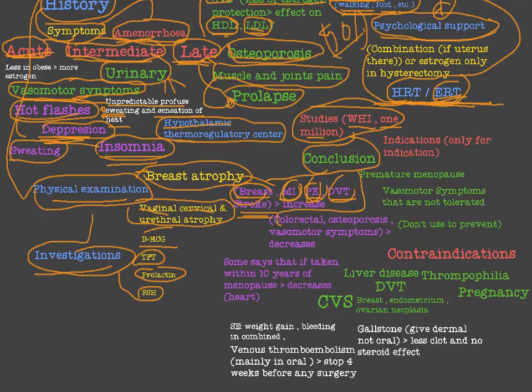On the other hand, the studies also concluded that HRT decreases the risk of colorectal cancer, osteoporosis, and vasomotor symptoms such as hot flushes. These are the conditions protected by hormone replacement therapy.